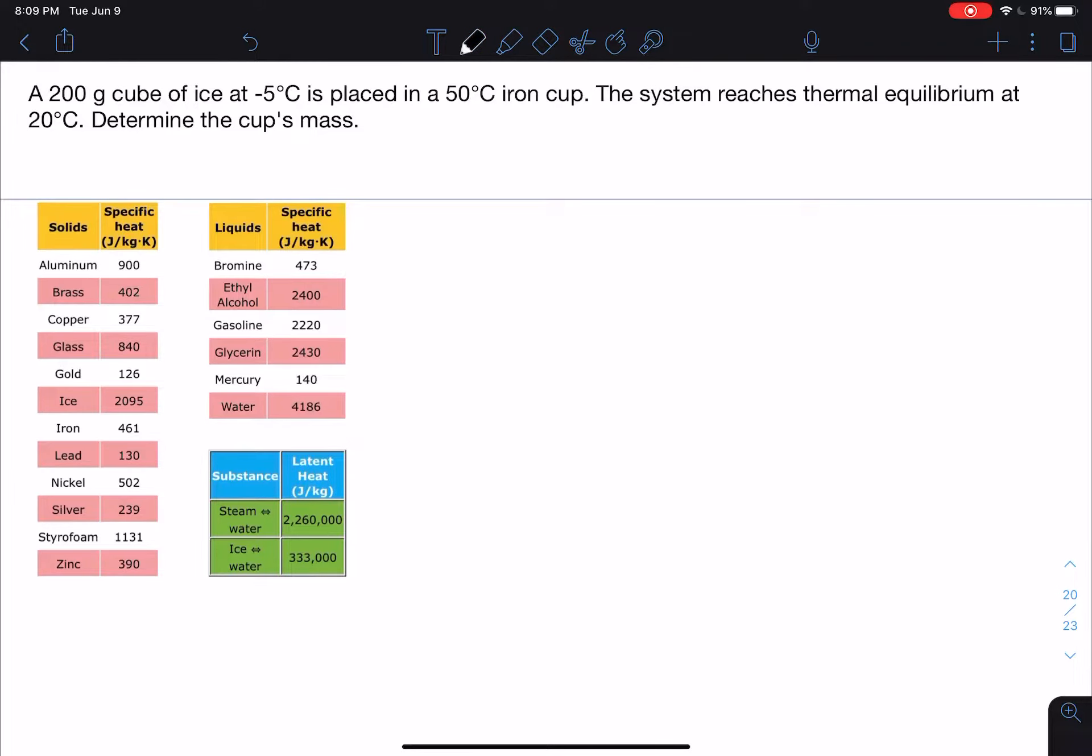Our approach is the same as we've been doing with calorimetry, which is to say that the sum of the Q's has to equal zero. In this case, I have two objects: I have ice, and I have iron. Let me rearrange this real quick. Let's put the iron first and the ice second.